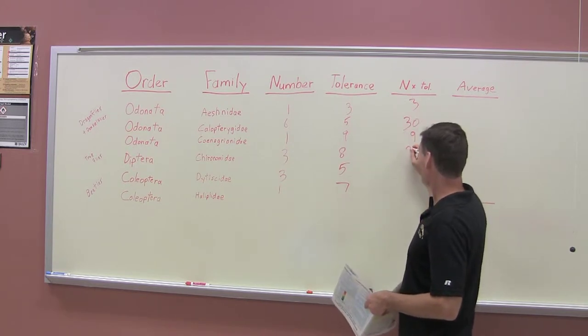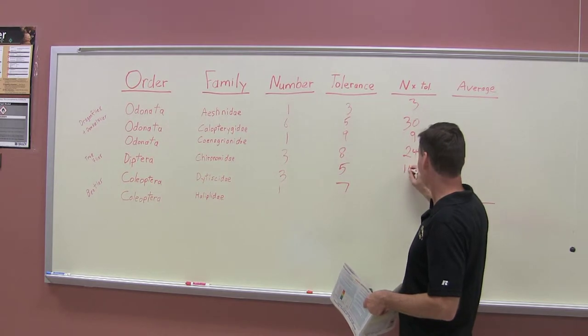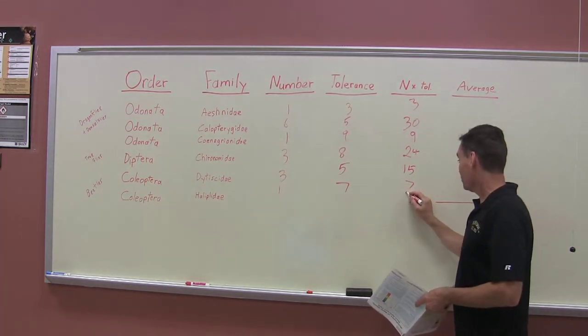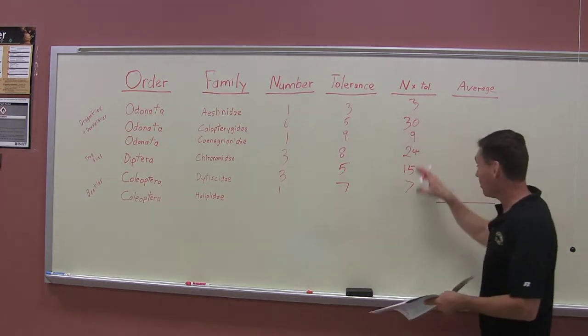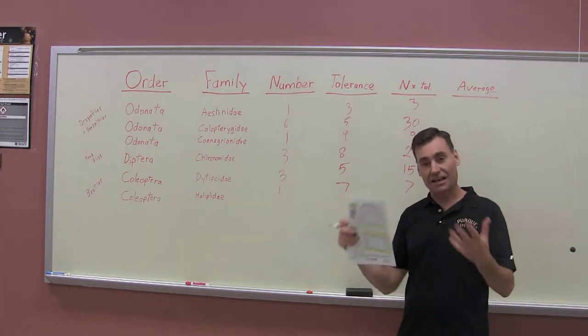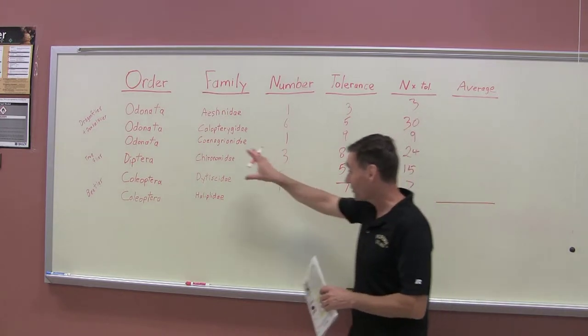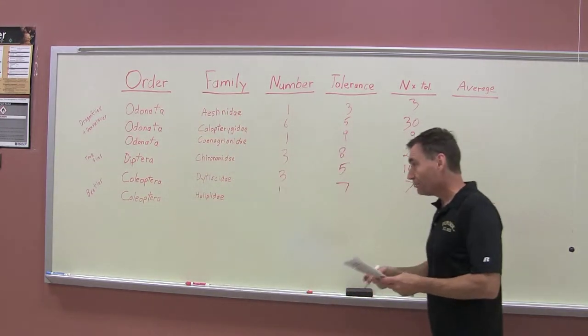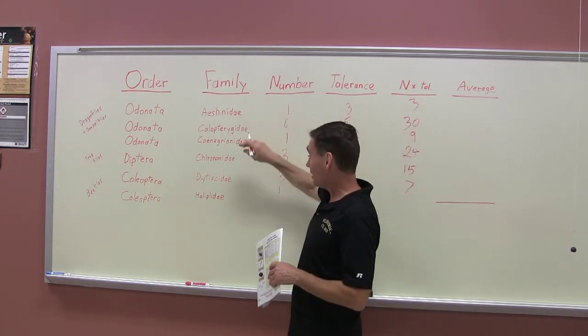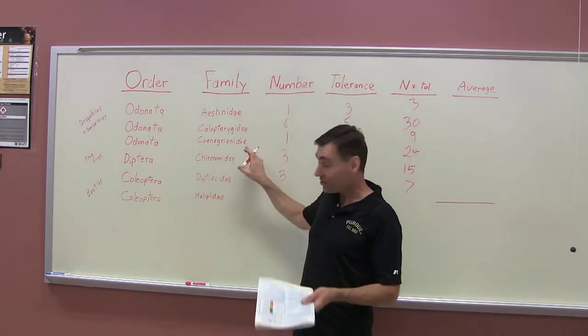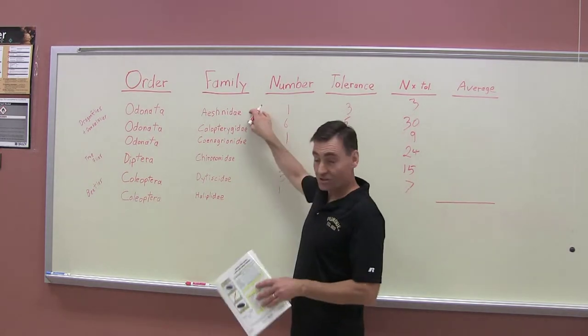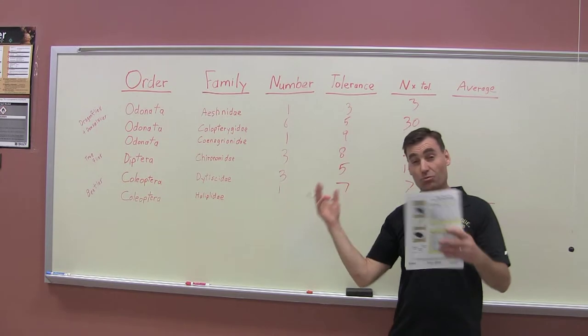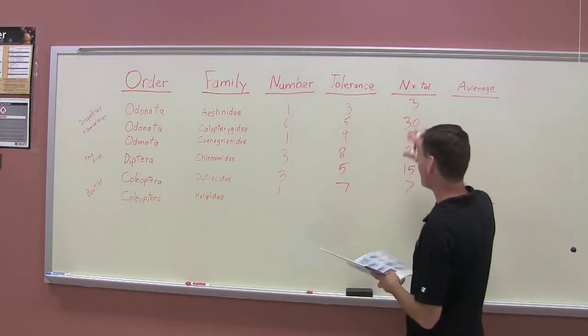You can just take an average across all of these, but it's better to take an average within these different orders of insects - an average of beetles, average of dragonflies. If you caught one dragonfly and a thousand midges, which is possible, this tolerance won't matter anymore because the thousand will completely swamp your answer mathematically. So we're going to take an average within these three orders.